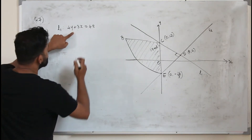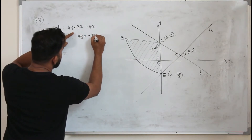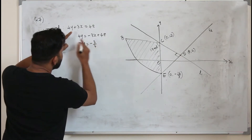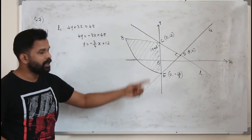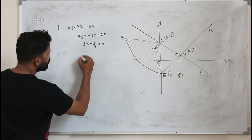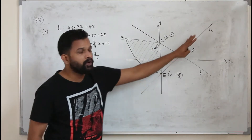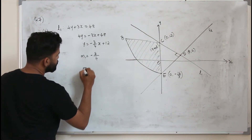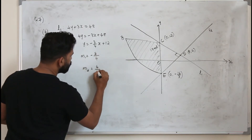Find the slope of L1 first by making y the subject. So 4y equals minus 3x plus 48, giving y equals minus 3 over 4 x plus 12. That is the equation of L1 in the form y equals mx plus c, so the slope is minus 3 over 4. When two lines are perpendicular, the slope of one is the negative reciprocal of the other, so the slope of L2 will be 4 over 3.